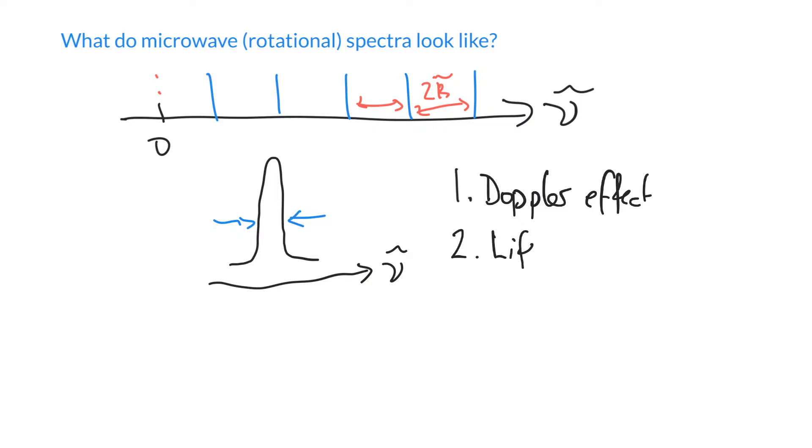We also see lifetime broadening. The idea is that states that do not live for a long time tend to have a large uncertainty in energy, which gives rise to a large width in the spectrum. To be honest, though, for these rotational spectra, they're actually fairly narrow. So those really aren't the two important effects that I want to talk about.